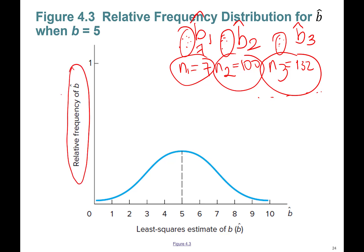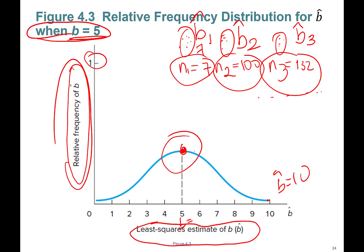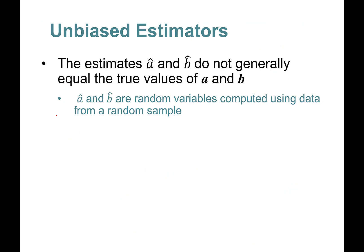Imagine doing this infinitely — what you get is a relative frequency distribution of beta-hat, also called a probability distribution function (PDF). Assume the true value of beta is 5. The PDF shows you the least-squares estimates of beta. The probability of finding a beta-hat close to 10 is very low, while finding a beta-hat around the true value of 5 is highly likely.